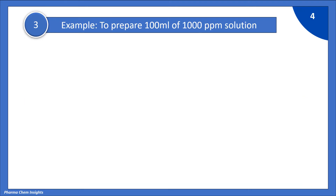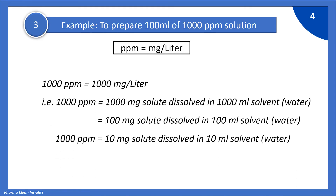Example: to prepare 100 ml of 1000 ppm solution. We know that ppm is equal to 1000 mg of solute dissolved in 1000 ml of solvent. But if you want to prepare this in a smaller volume, 100 mg of solute dissolved in 100 ml of solvent will also give you 1000 ppm. And 10 mg of solute dissolved in 10 ml of solvent will also give you 1000 ppm.